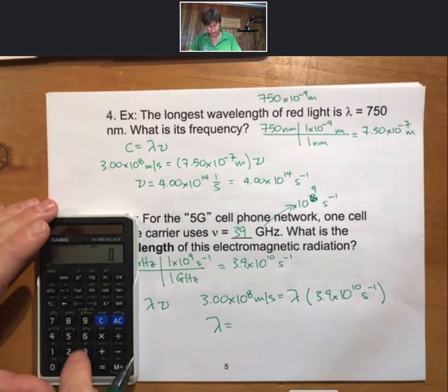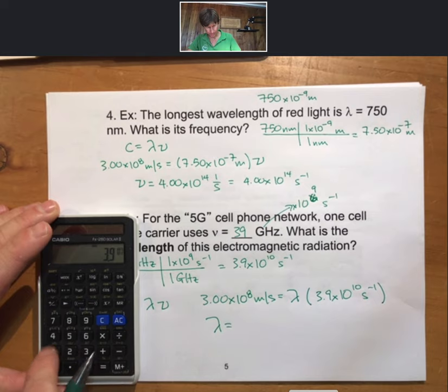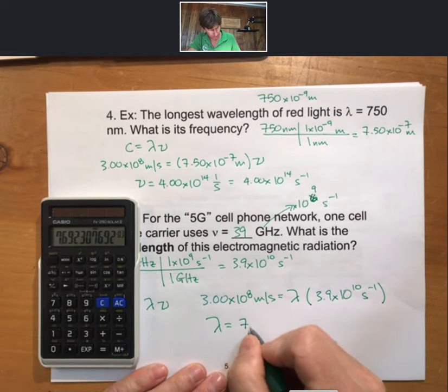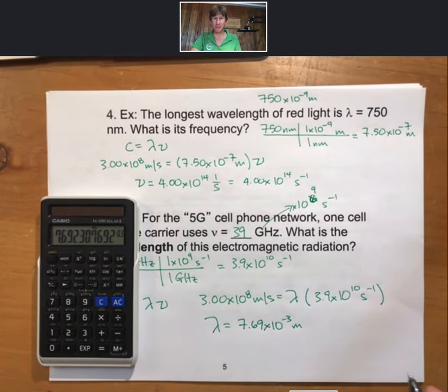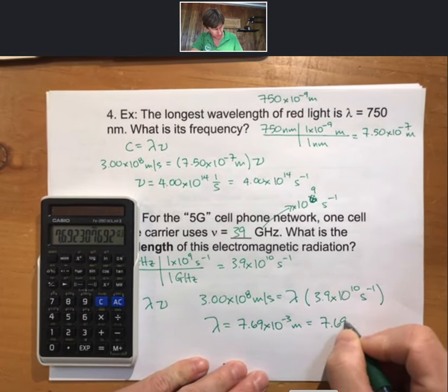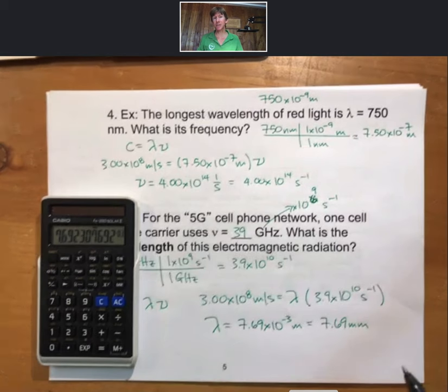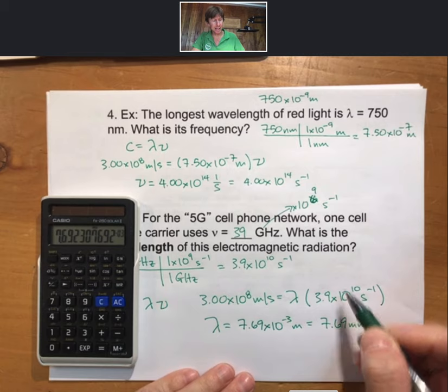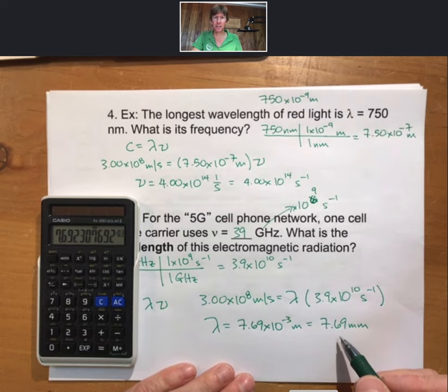Now I can plug that into the speed of light equals wavelength times frequency. And I get a wavelength of 7.69 times 10 to the minus 3 meters, which is a fine answer. I'm going to then convert it into millimeters by moving the decimal point three places and removing the exponent. So the cell phone signals will have approximately millimeter wavelengths and sometimes are called millimeter waves. We can see that the frequency here is significantly less than for visible light and the wavelength is significantly longer, and that's because wavelength and frequency are inversely related.